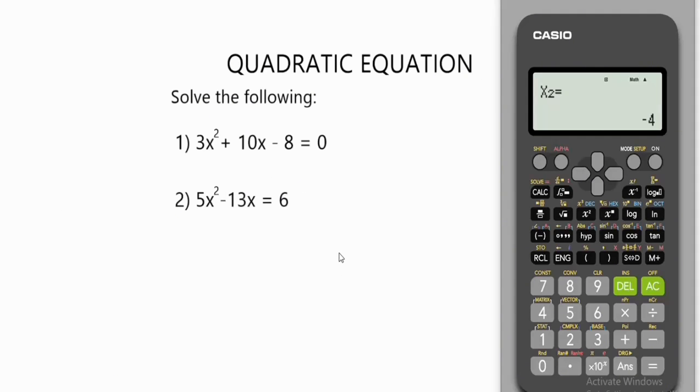Let's solve question 2. Press the AC button to wipe out these values we have already input. The boxes are now empty. For question 2, we have 5x² - 13x = 6. First, the 6 crosses over the equality sign and it will change to negative 6. So the new equation will now be 5x² - 13x - 6 = 0. Very important guys.